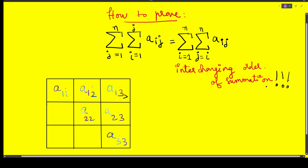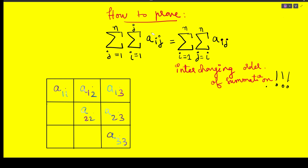I think this is pretty interesting and it has a lot of applications. So let's see what we're going to prove. Basically this is a summation — also a summation of some elements. I have written down the elements in this small square here: a₁₁, a₁₂, a₁₃, a₂₂, a₂₃, and a₃₃. This is the total number of elements in this particular summation.